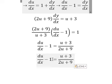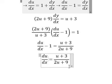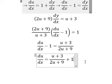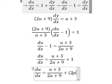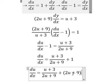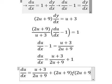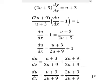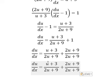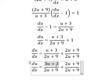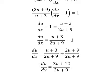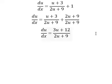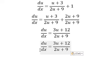So I will move this one to the right. Next, negative 1 goes to the right. Now we can find a common denominator. So 2u and u gives us 3u, and 9 plus 3 gives us 12. Now I will move this to the left and dx to the right.